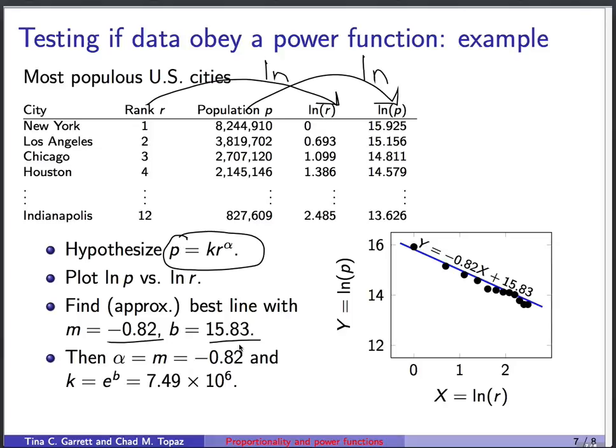This means that in our original power law, the exponent alpha is minus 0.82. And the constant of proportionality is e to the y-intercept. That's e to the 15.83, which turns out to be this large number, 7.49 times 10 to the sixth. So then we would have an approximate power law that describes this original rank and population data.